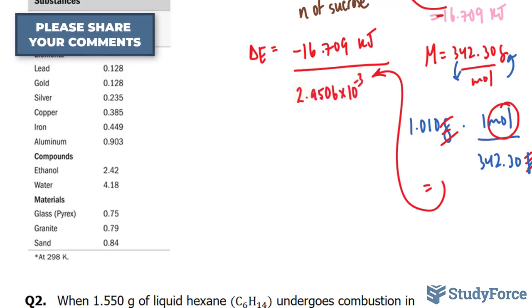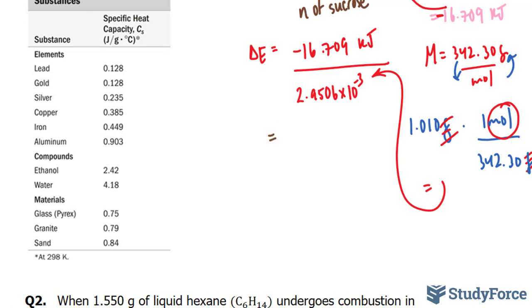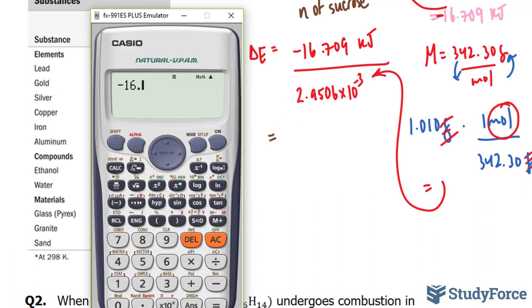Now I can find delta E, using our calculator once more, negative 16.709 divided by the answer we just found, and this gives us negative 5,662 kilojoules per mole.